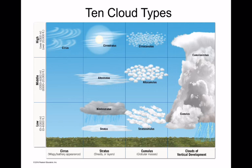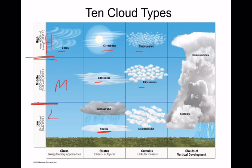Here they are all at once — all 10 of them. I like this figure because it's broken down into low, medium, and high. The highs have cirro or cirrus associated with them, the middles have alto, and the lows have nothing. We have a low flat and a low flat-fluffy. And we have two precipitating clouds: nimbostratus and cumulonimbus.